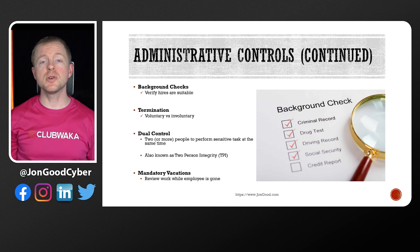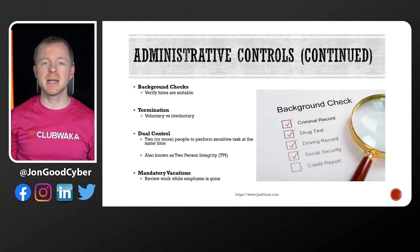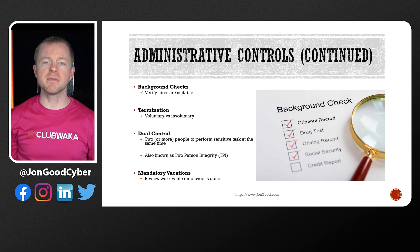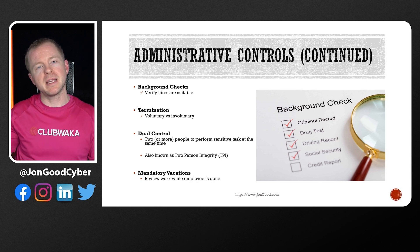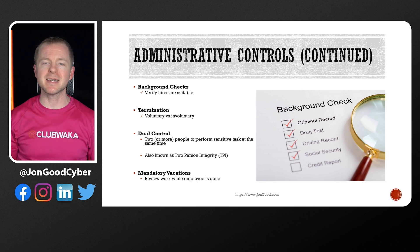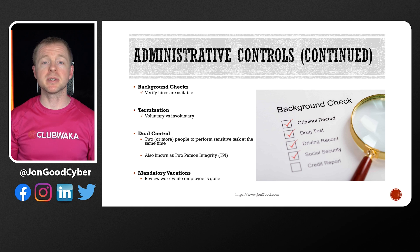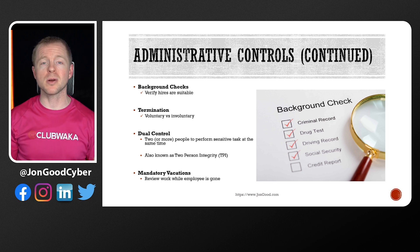Dual control is where at least two people are required at the same time to perform an extremely sensitive task. Some environments actually call this two-person integrity. One of the most common examples of this is in missile silos, where two people on opposite sides of the room have keys and they have to turn them at the exact same time to get the missiles to launch. Mandatory vacation forces people to take vacations and allows us to review their work and potentially identify malicious activity.